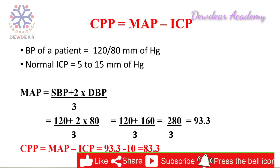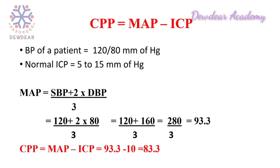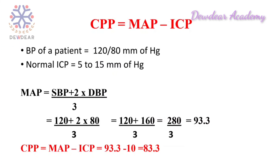Now, CPP = MAP − ICP = 93.3 − 10 = 83.3 mmHg. We take ICP as 10 because the normal range is 5 to 15, so we use the middle value. The result is 83.3, which falls within the normal CPP range of 60 to 100 millimeters of mercury.